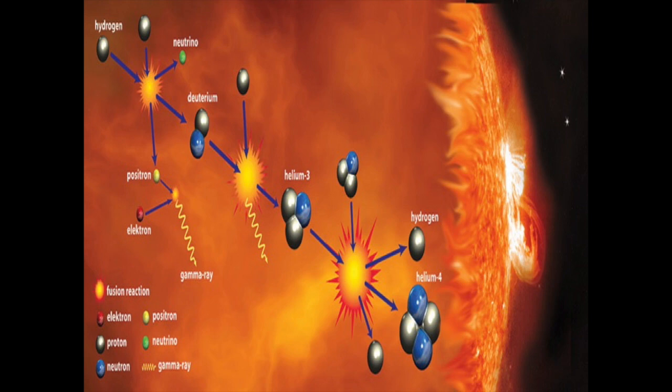Iron is the most stable element and can't be fused into anything heavier. Once the core of the star is solid iron, the star will die, and depending on the star's mass, it could die a violent death called a supernova or even become a black hole.